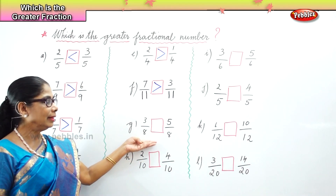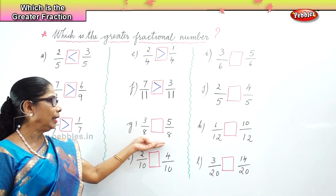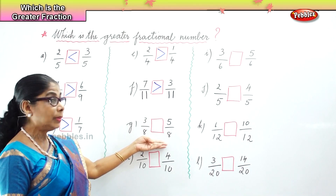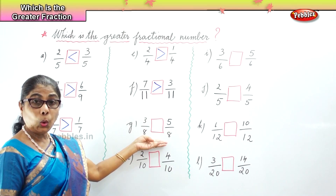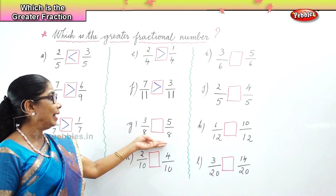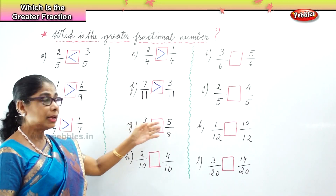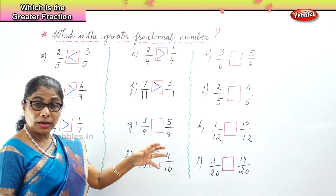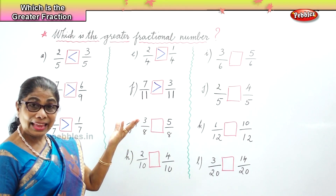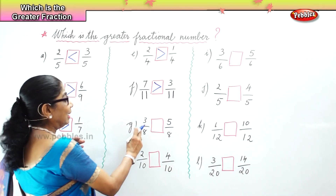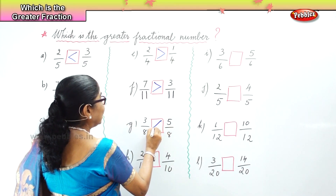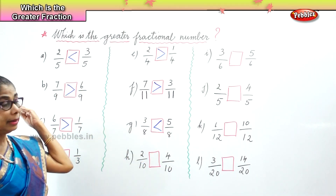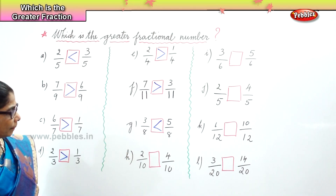Next we have three by eight and five by eight. The denominators are the same — eight. The whole is divided into eight parts and we have three by eight and five by eight. We know five is bigger, so five by eight is greater than three by eight.